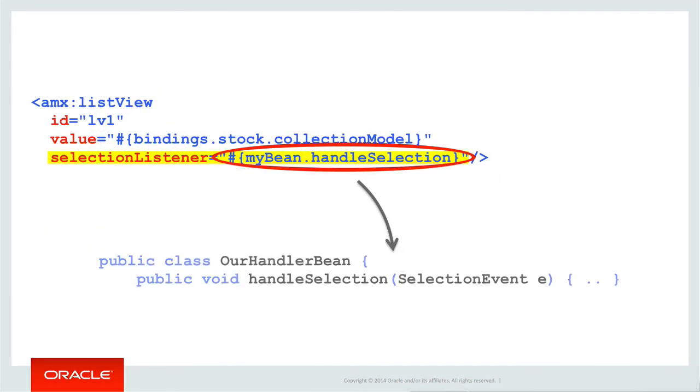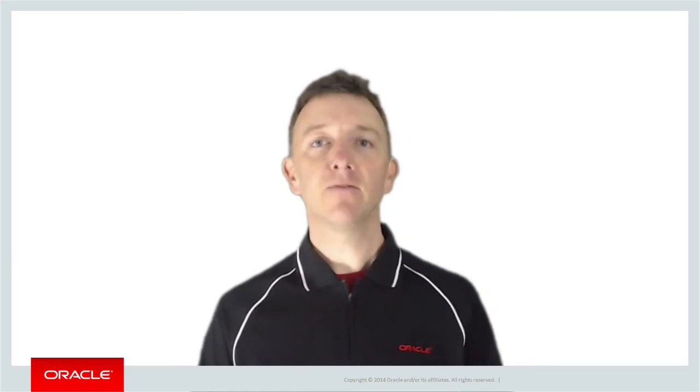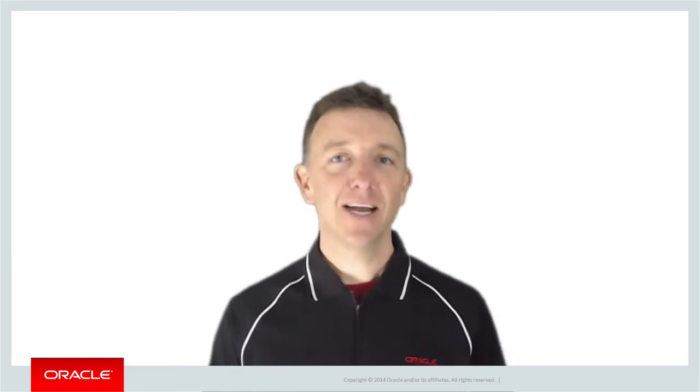Alternatively, if you have a list view component with a selection listener, then it requires a method that receives a selection event. As you can appreciate, there are numerous events the framework handles. How do you know what parameter each method needs to take? The answer is basically you don't need to, because as you saw when we demonstrated hooking up the managed bean, when we created the listener in our managed bean via the property inspector, it creates the method with the right signature for you.